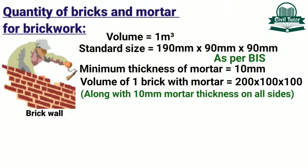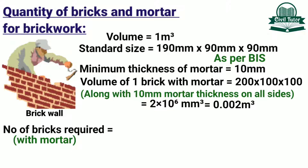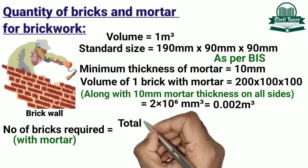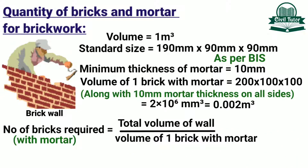Finally, we will get the volume of 1 brick with mortar equal to 2 × 10⁶ mm³, which will be equal to 0.002 m³. So the number of bricks required for constructing 1 m³ of wall will be total volume of wall divided by volume of 1 brick with mortar, which will be 1 ÷ 0.002 = 500 bricks.